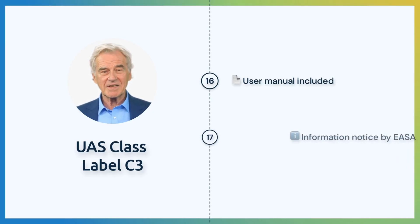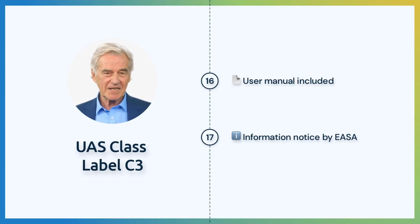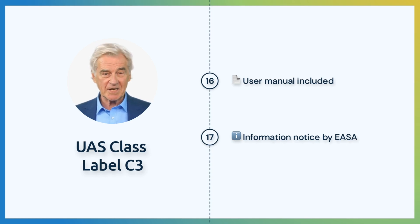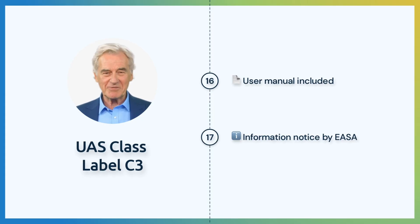And lastly, the UA shall include an information notice published by the European Union Aviation Safety Agency about limitations and obligations within the implementing regulation 2019-947.